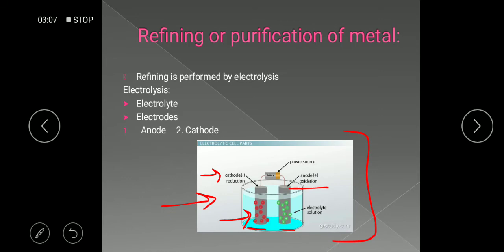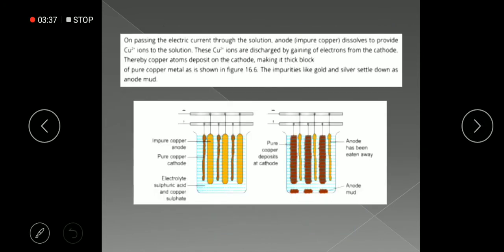This is the general electrolytic cell diagram showing its construction. It is a cell in which, when we complete the circuit by connecting the two electrodes to a battery or power source, the reaction starts. The electrolyte passes electricity to complete the circuit, the ions are produced and converted, and that is what drives the refining process.